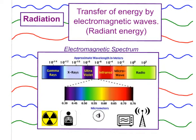Now let's look at the third way thermal energy can be transferred: radiation. Radiation is the transfer of energy by electromagnetic waves. Here are some examples — all of these waves transfer energy from one place to another and all travel at the speed of light. They include gamma rays, x-rays, and ultraviolet rays.